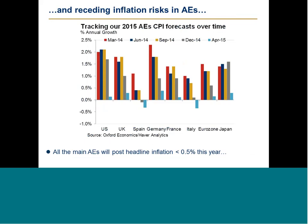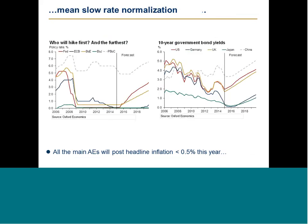Moderate growth and receding inflation risks in advanced economies. This chart shows the evolution of the forecast for inflation since a year ago, and as you can see, all the main advanced economies will post headline inflation below 0.5% this year — incredibly low inflation, mostly related to the fall in oil prices since last year. With this combination of weak growth and very low inflation, we don't expect central banks to hike rates aggressively in the advanced world in the next five years.